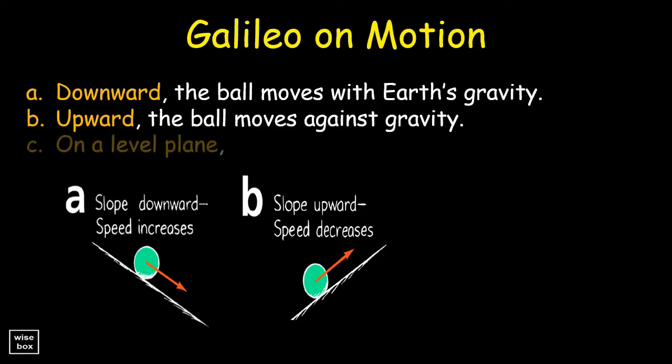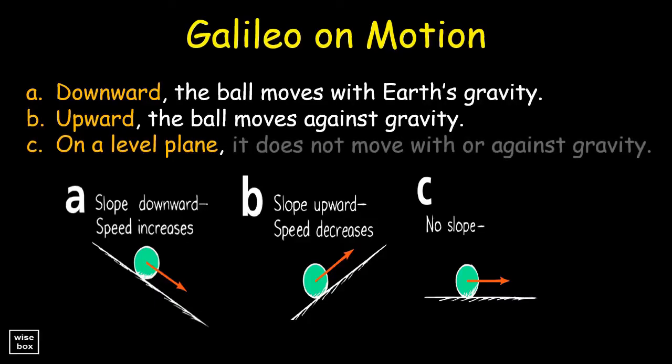On a level plane, Galileo observed that the ball decreased speed and then stopped moving. In this case, we know that the ball does not move with or against gravity. So why did the ball stop moving?